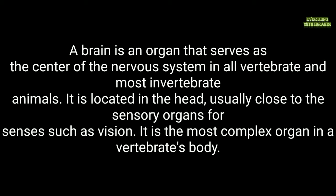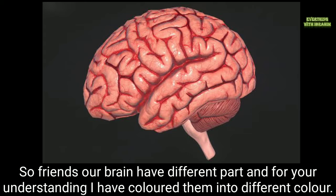A brain is an organ that serves as the center of the nervous system in all vertebrate and most invertebrate animals. It is located in the head, usually close to the sensory organs for senses such as vision. It is the most complex organ in a vertebrate's body.